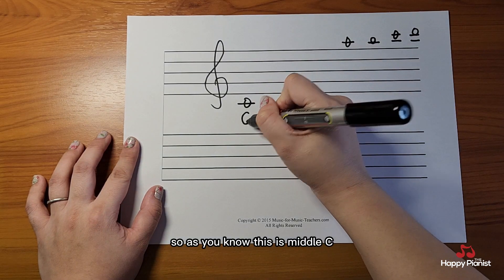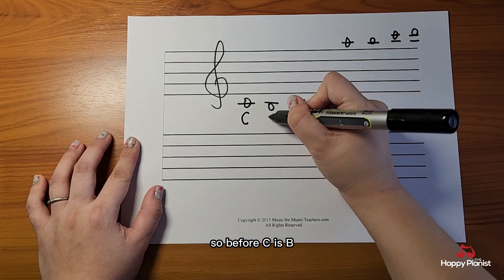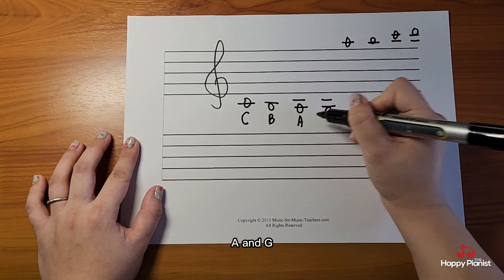As you know, this is middle C. If you're coming down, you go backwards. So before C is B, A, and G.